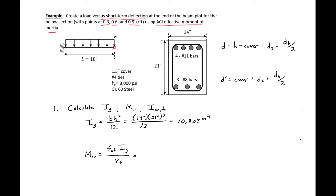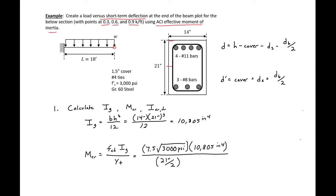M-cracking can be found as fr times I over y, where fr is the tensile strength of concrete: 7.5 times the square root of 3,000 psi. Our I we just found as 10,805 inches to the fourth, divided by y, the distance from the neutral axis (centroid) to the extreme tension fiber — so 21 inches divided by 2. Taking this times 1,000 pounds per kip gives us units of kip-inches: 422.7 kip-inches.